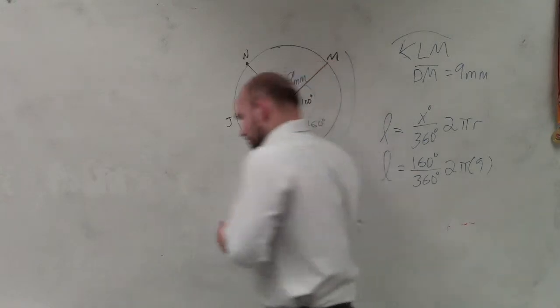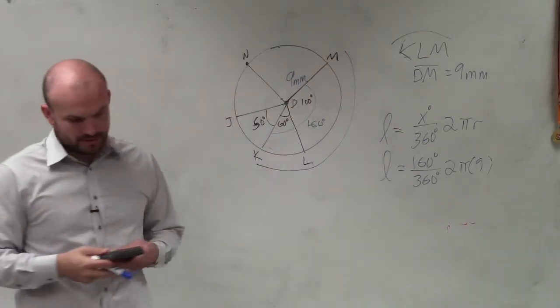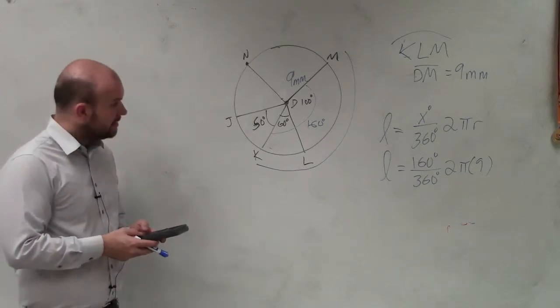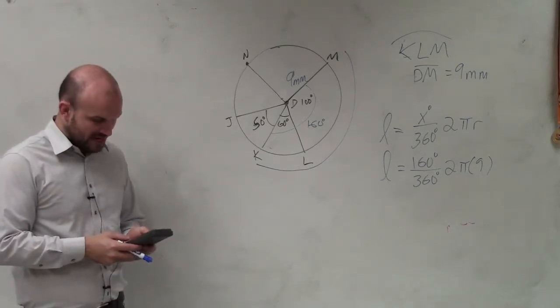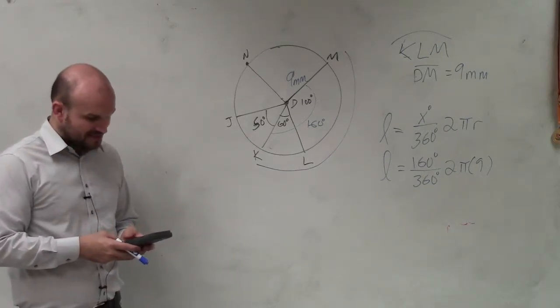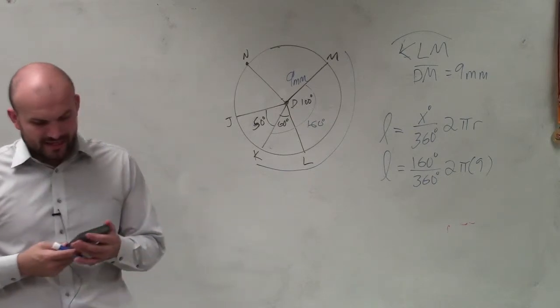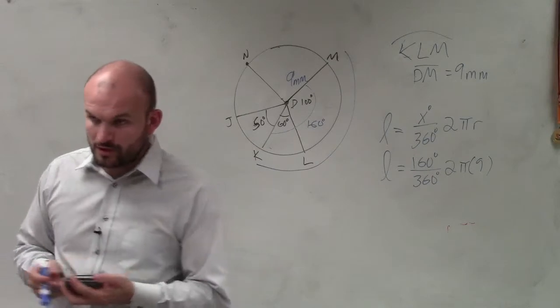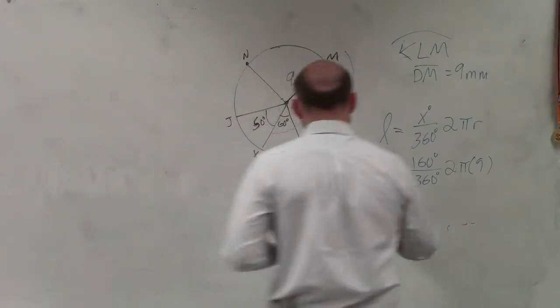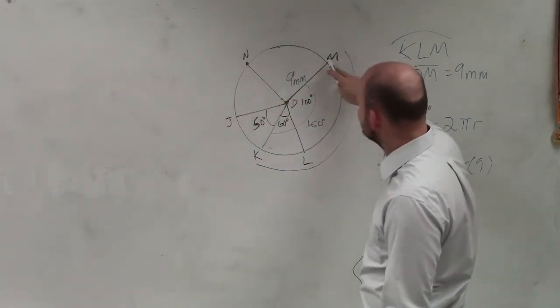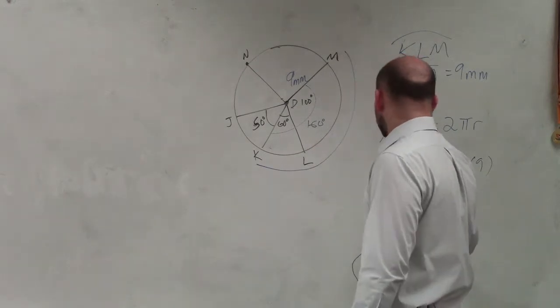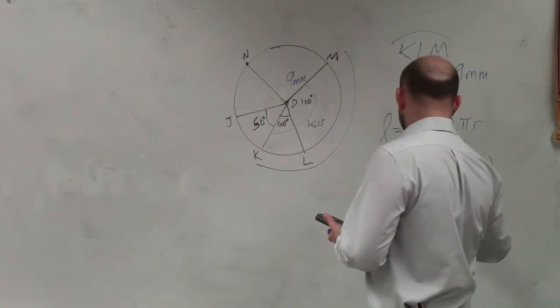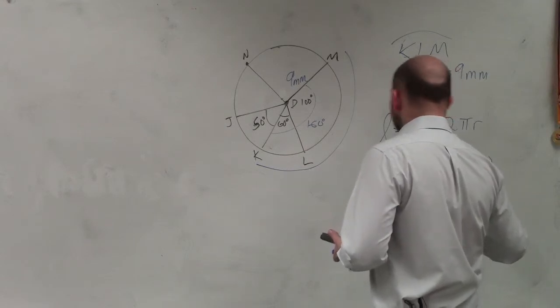So now I take my calculator and I do 160 divided by 360 times 2 times pi times 9. And when I round it to the hundredth, I get 25.13. So the length from K to M through L is going to be 25.13 millimeters.